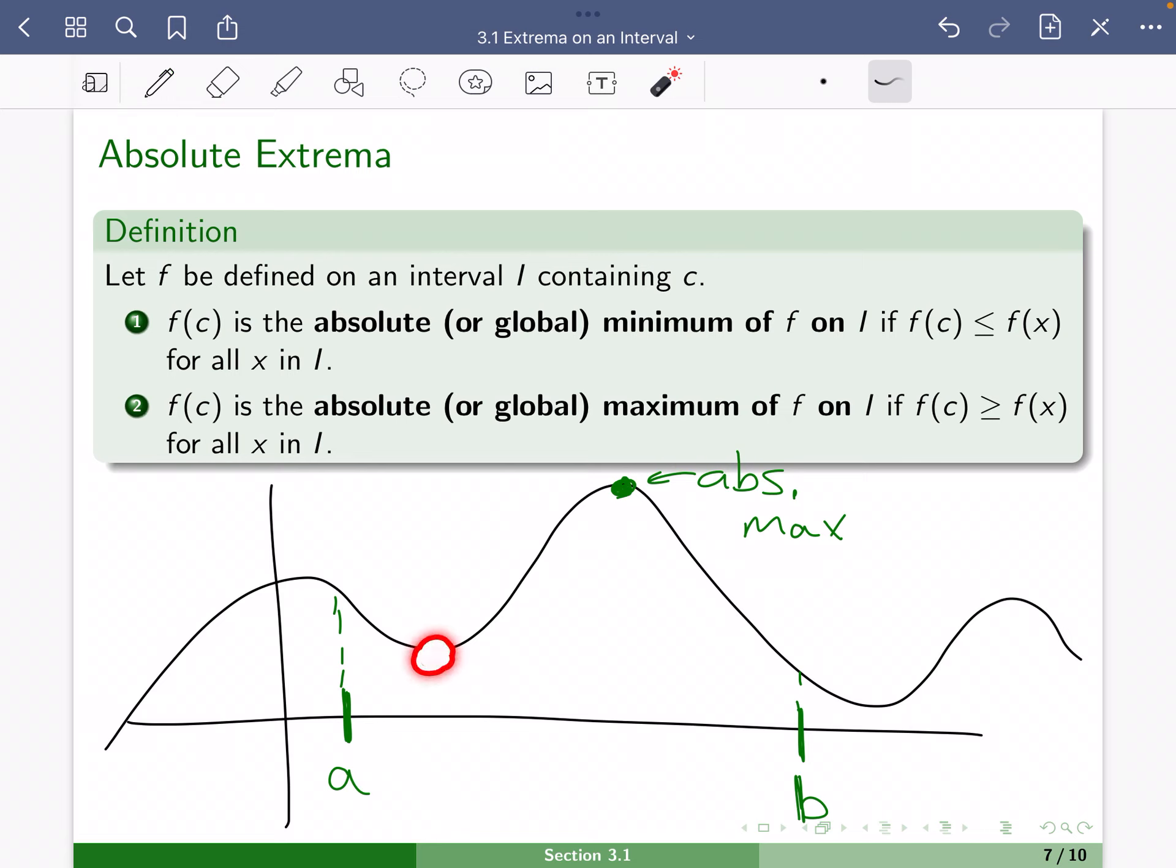What is the absolute smallest value? Well, you might be tempted to say right there, we have a relative minimum right there. That's the smallest value. Except for this interval continues and there are values smaller. And so on that interval, if we're talking about a closed interval, right there is our absolute minimum.